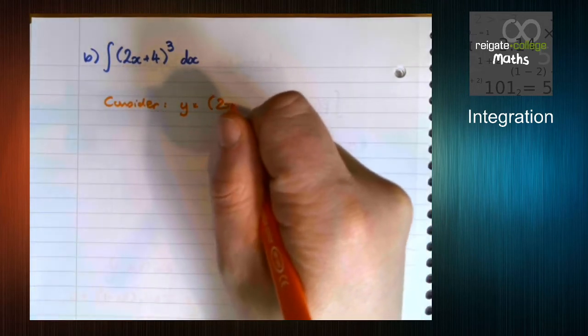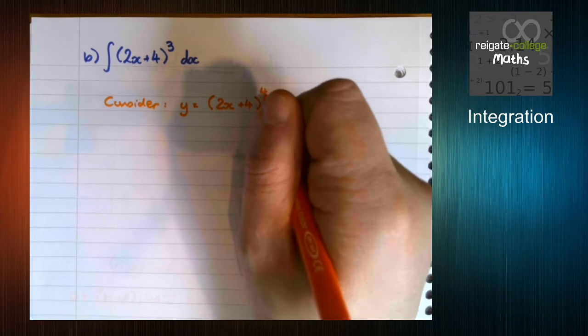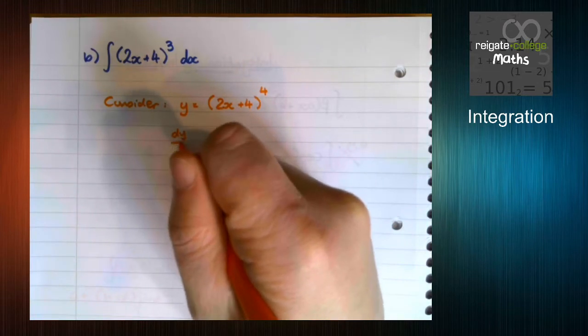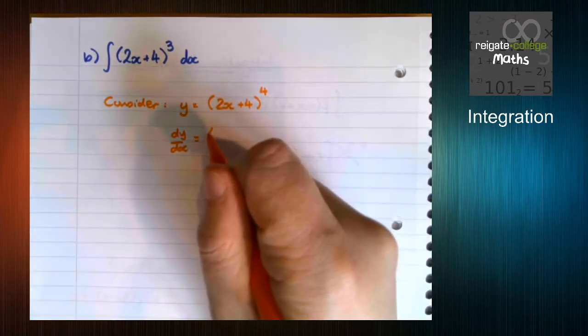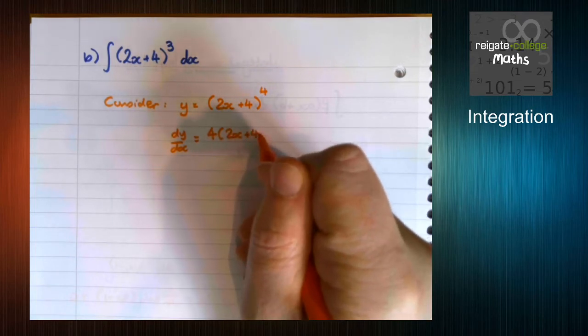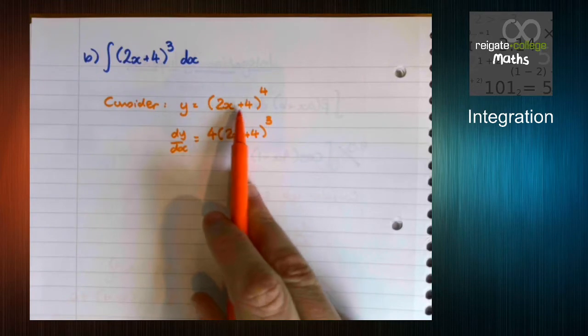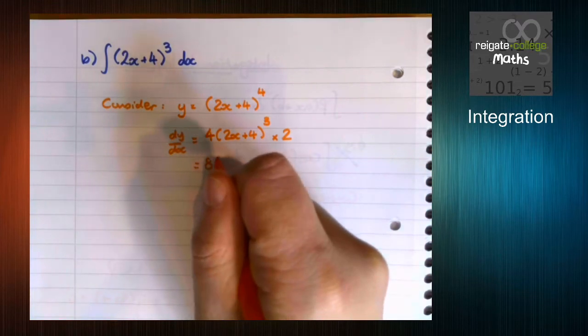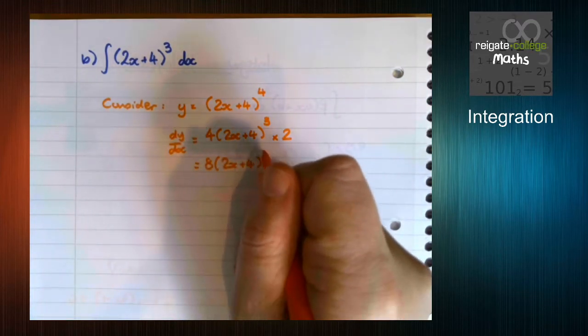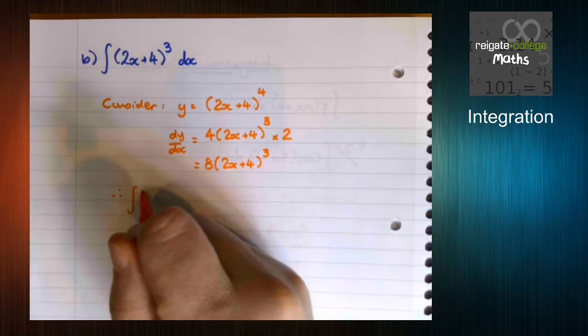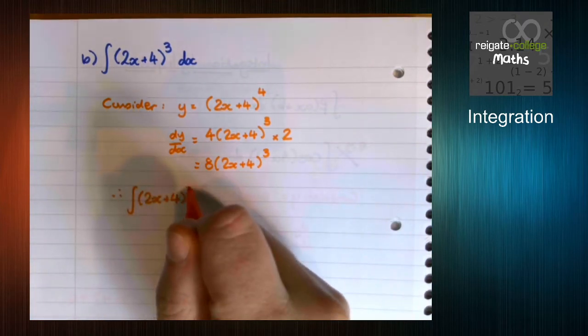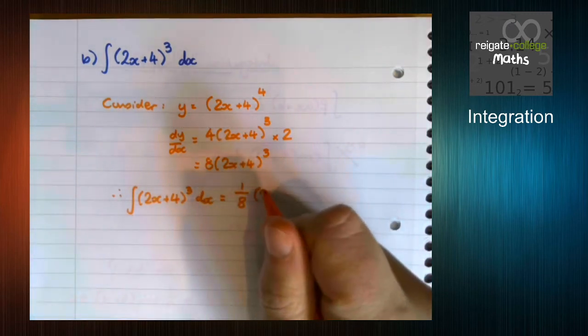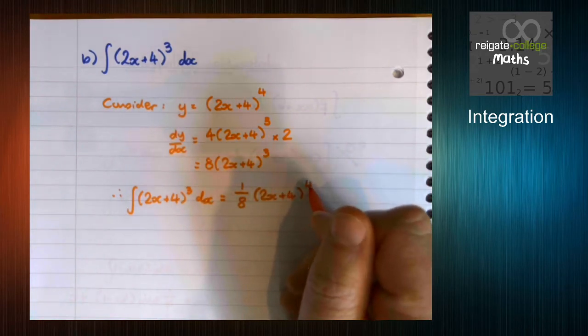Like before, we know that brackets on the whole behave like polynomial differentiation. So we multiply by the power, reduce the power by 1, but we times by the derivative of the bracket, which in this case is 2. Therefore, the integral of 2x plus 4 cubed is going to be 1 eighth times 2x plus 4 to the 4 plus c.